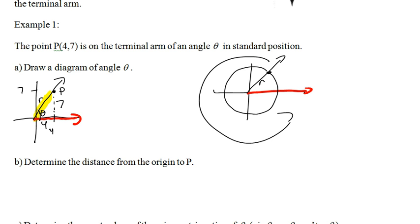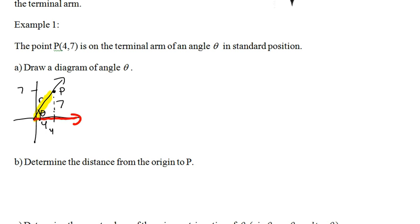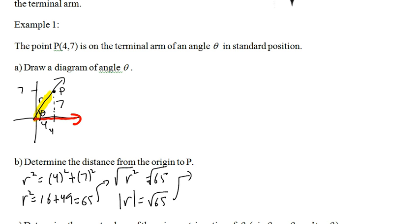So R is going to be the radius of that circle. That's why we call the distance from the origin to point P R. And now part B wants us to determine the distance from the origin to P. So we know that R squared is going to equal 4 squared plus 7 squared, which is going to be 16 plus 49, is 65. So I've got R squared equals 65. I'm going to square root both sides. The square root of R squared is the absolute value of R. It equals root 65. So R is going to equal plus or minus root 65. And of course, our radius can't be negative, so our radius is going to be root 65.